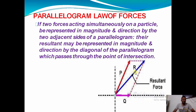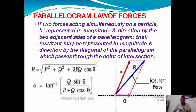So again, the statement of the parallelogram law of forces: two forces passing at a point represent the adjacent sides of a parallelogram, having both magnitude and direction. For these two forces there is a resultant passing through the same point, representing the diagonal. The resultant formula is R equals square root of P squared plus Q squared plus 2PQ cos theta, and the angle alpha equals tan inverse of Q sin theta divided by P plus Q cos theta.